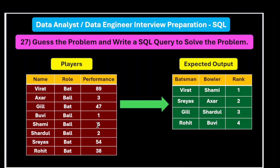Shami took five wickets. The combination pairs the highest run scorer with the highest wicket taker — 89 is the highest runs, five is the highest wicket count. So the first row is the top batsman and top bowler. The second row combines the second-highest run scorer (Shreyas at 54) with the second-highest wicket taker (Akshar). Likewise we need to extract the output in this way.